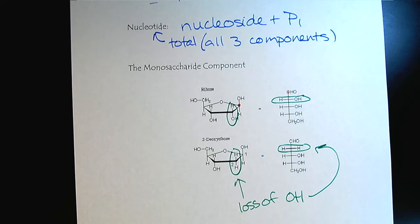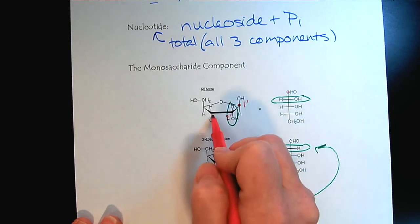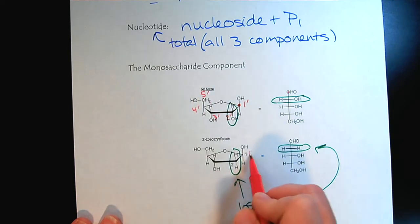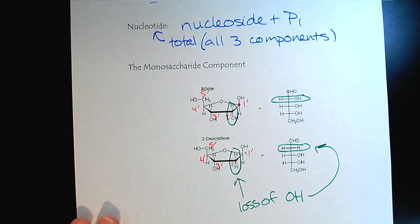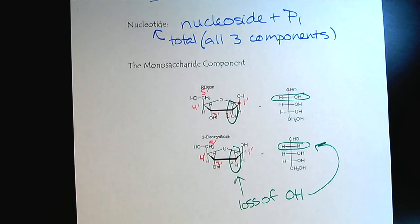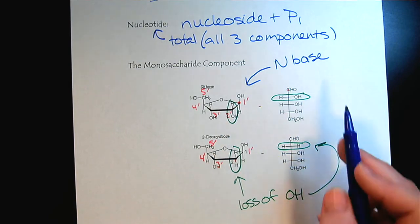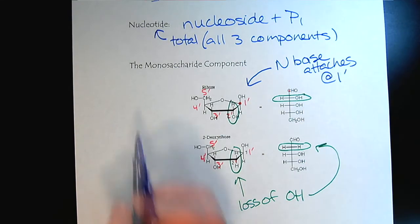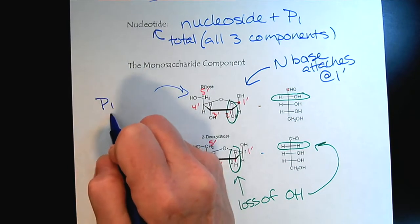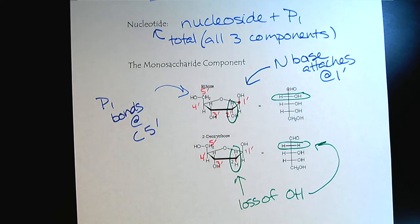Now the numbering of the sugars - because we have three components, the sugar numbers are assigned a prime. The anomeric carbon gets the lowest possible number, and then the other carbons just get numbered from there. The nitrogenous base bonds off of carbon 1 prime, and the phosphate group bonds at carbon 5 prime.